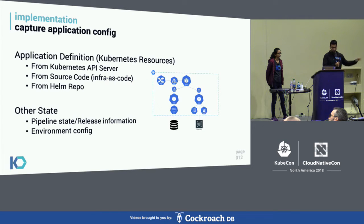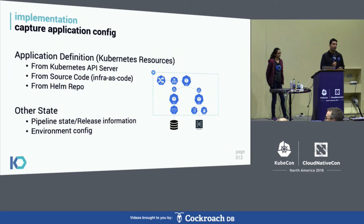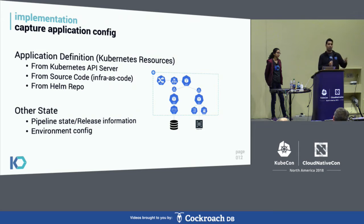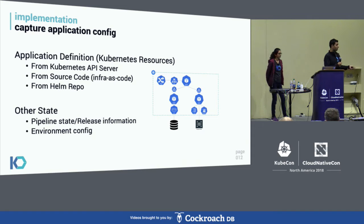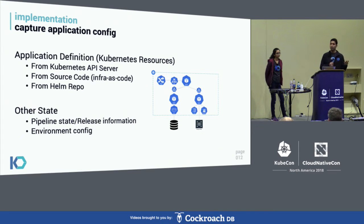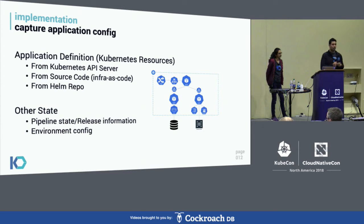The first topic is Kubernetes resources and application configuration. What are you going to do about capturing Kubernetes resources, shared secrets, pipeline information, and deployment configuration? When it comes to Kubernetes resources, you can go to the API server for runtime state, use infrastructure-as-code source code references, or protect Helm charts. Applications are so dynamic that configurations change often, so you want to make sure the configuration you capture matches the data you back up.